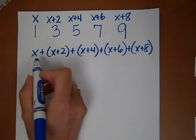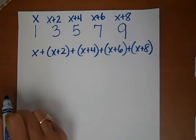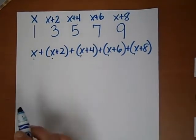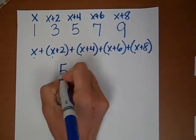Now, just using the x's, we can go ahead and combine like terms. How many x's do we have? We have 1, 2, 3, 4, 5 x's. So we have 5x.